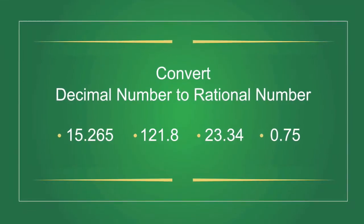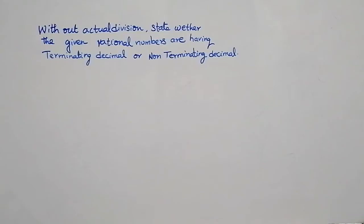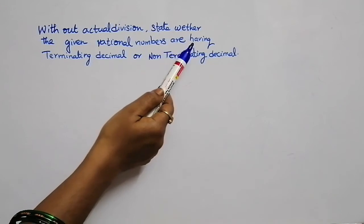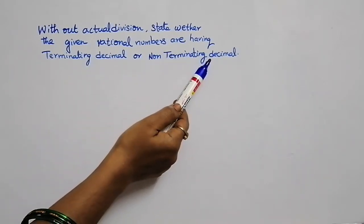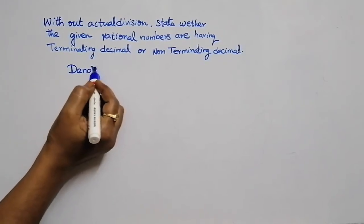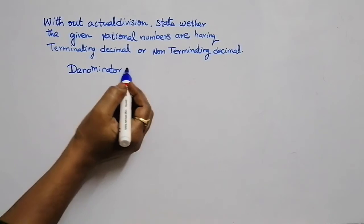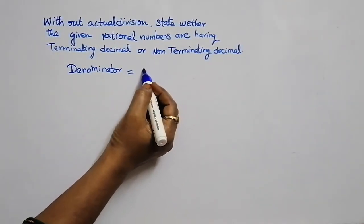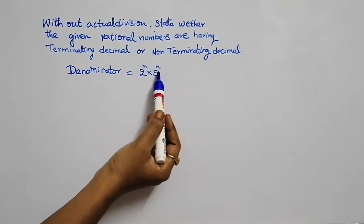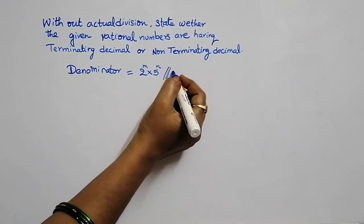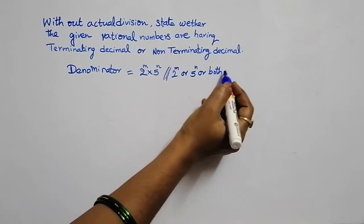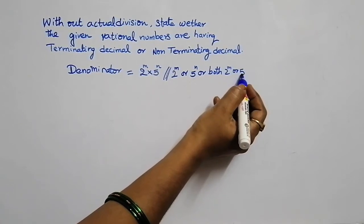Now I am going to explain, without actual division, how to state whether the given rational numbers have a terminating decimal or non-terminating decimal. The key condition is: the denominator of the fraction should be in the form of 2 power m, or 5 power n, or both — that is, 2 power m into 5 power n. No other prime factor should be present in the denominator.